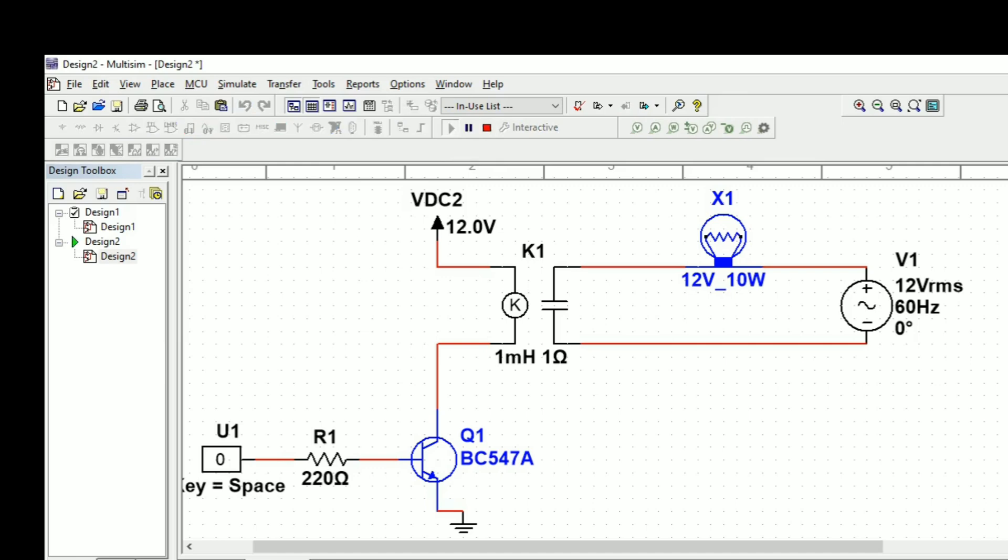Let us run the circuit now. Digital zero is given, so that time the load is not glowing. When I make the digital one, that time this bulb is glowing. 12 volt is going through.